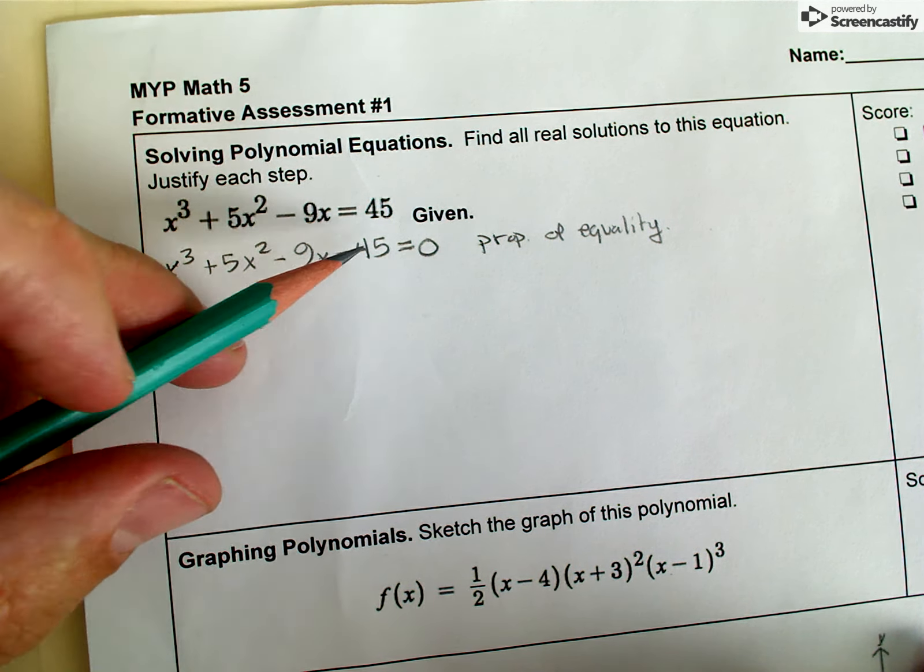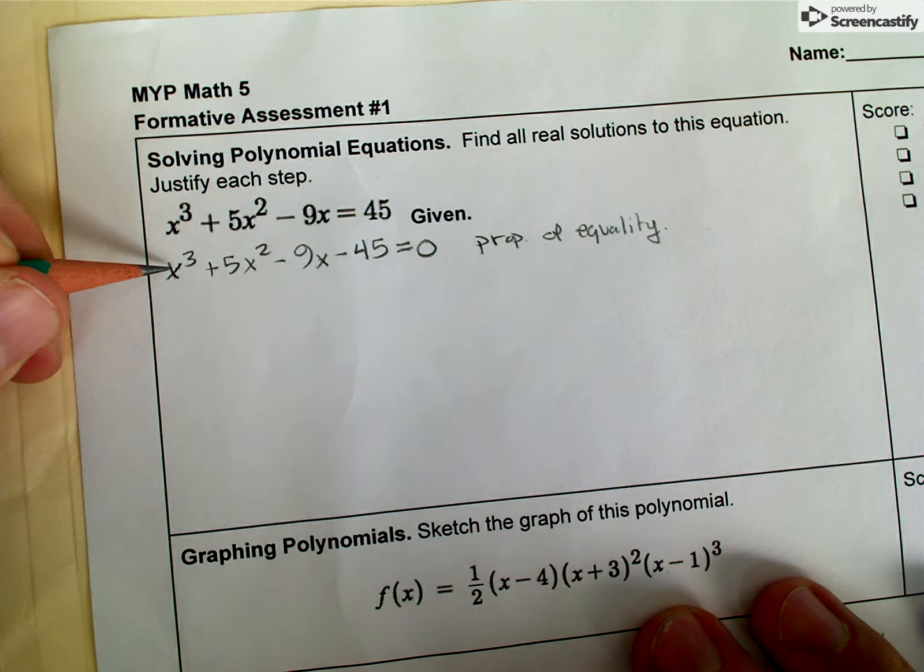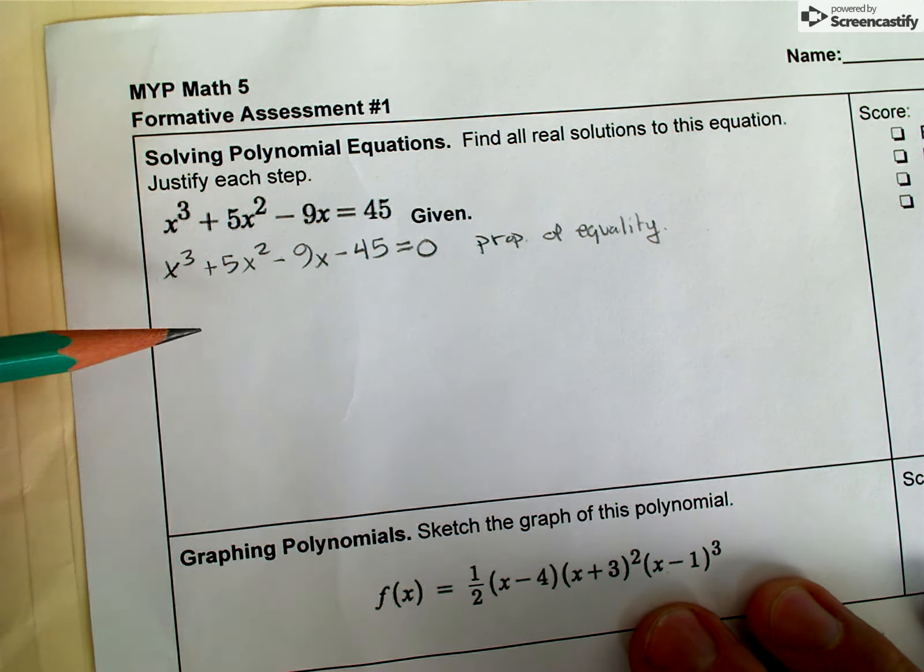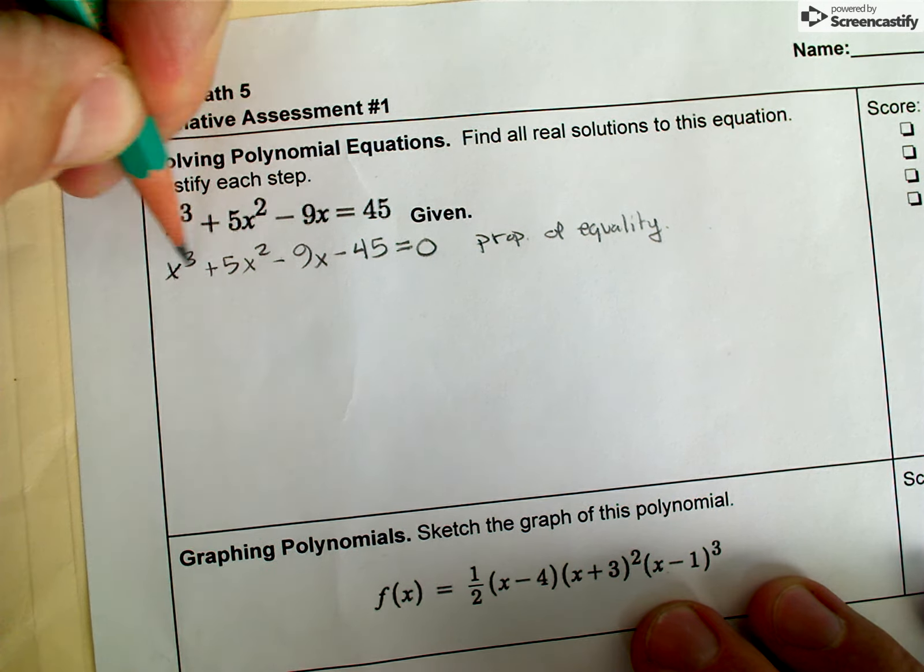Anytime we're moving terms from one side to the other, we're typically using the properties of equality. Now I have my third degree polynomial and it does equal zero, and the first strategy for solving, for factoring a third degree polynomial, is to think about grouping.